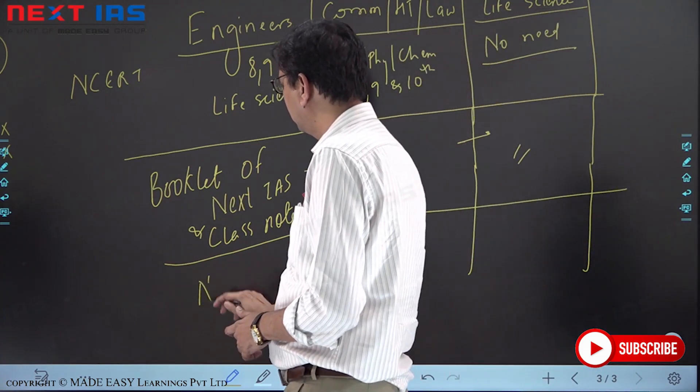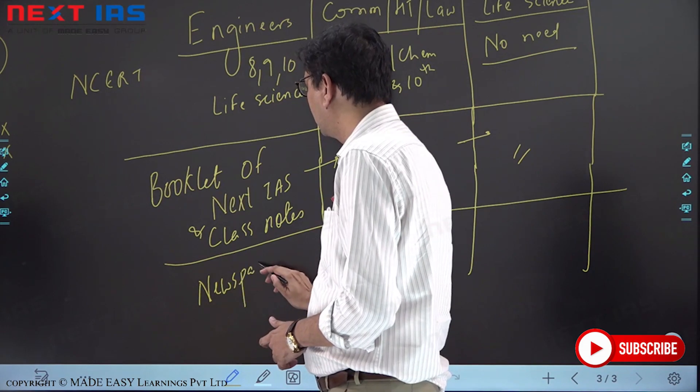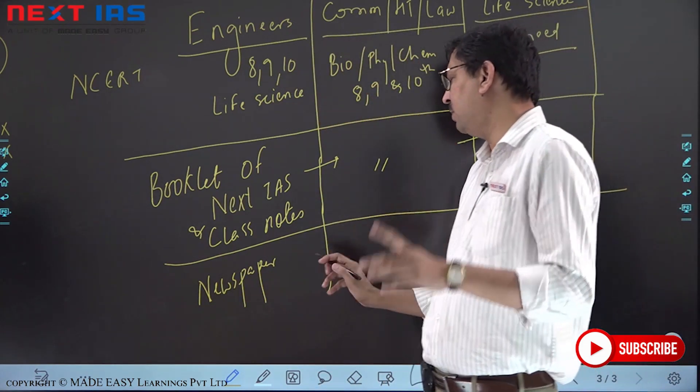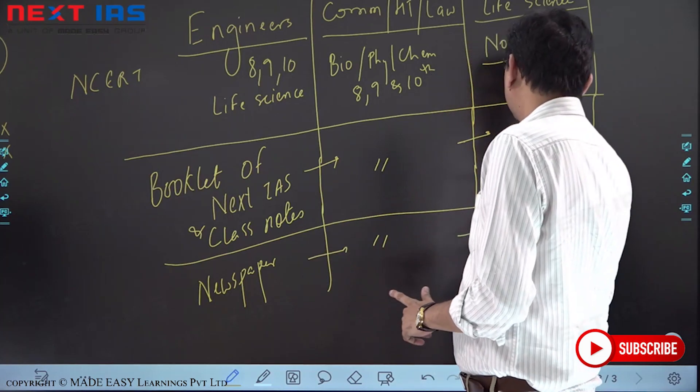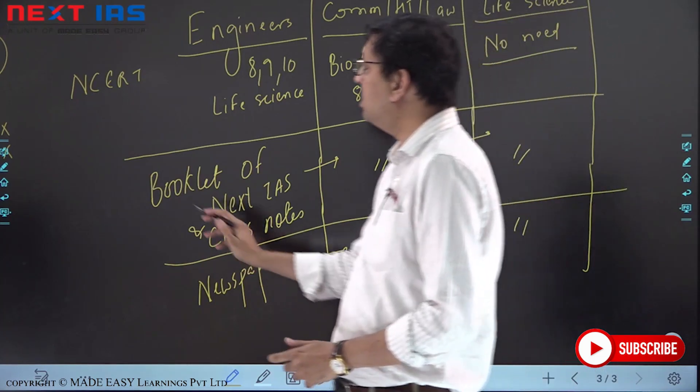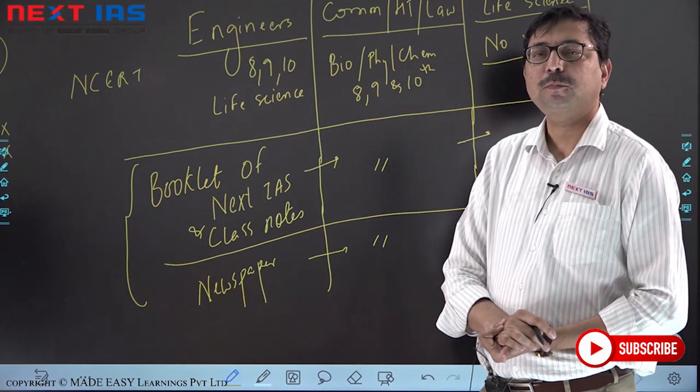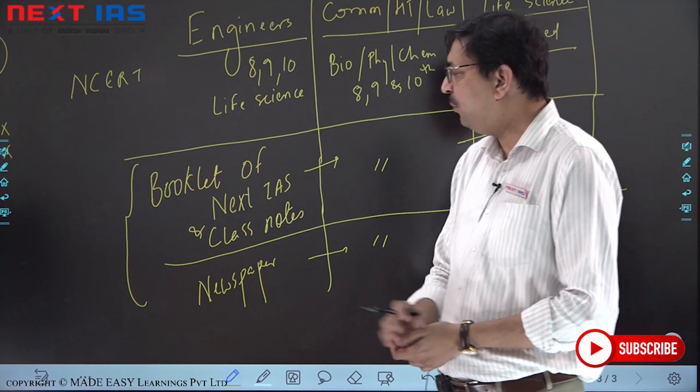Newspaper. The newspaper, The Hindu, Indian Express, any one. Questions will come from here. If you can manage these columns, science and technology is giving you around fifteen.